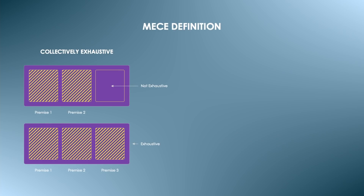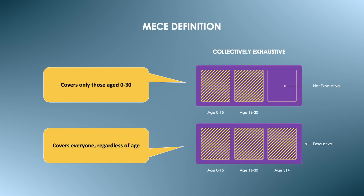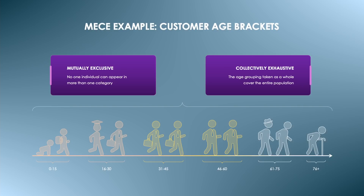Collectively exhaustive means that all premises are covered that lead to the conclusion. Using brackets again, it means that all brackets must be covered. The problem with missing premises is that the conclusion is not fully supported. Put together, it looks something like this: no bracket overlaps with another, and taken together they represent a full cycle — no bracket is left out.